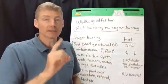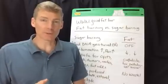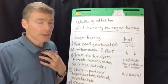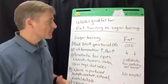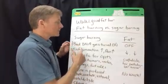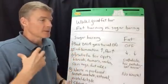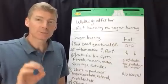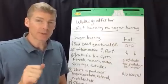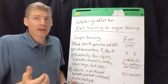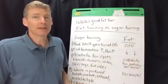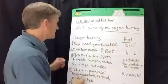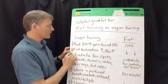Disadvantage number one: sugar burning spikes insulin. Insulin is a very dangerous hormone — it creates inflammation, and it's very troublesome when it comes to diabetes. Since sugar burning is so rare, it takes special DNA for that to happen, and it just so happens that that special DNA is the same DNA that causes heart disease, diabetes, and cancer.